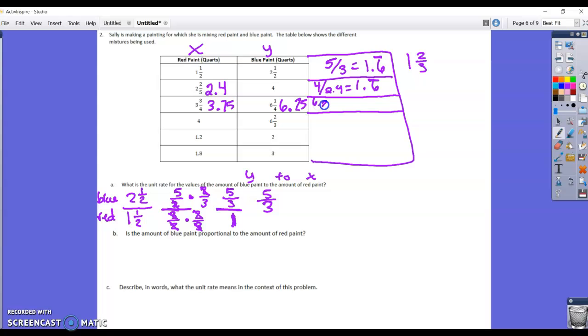So, 6.25 is the y divided by the x, 3.75, so 6.25 divided by 3.75 equals, and in my calculator, I get 1.6 repeating on forever, so I'm still having the same constant.